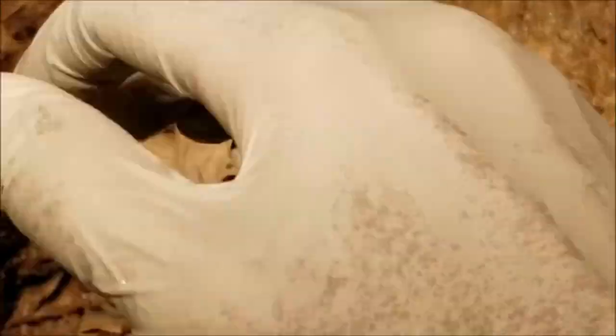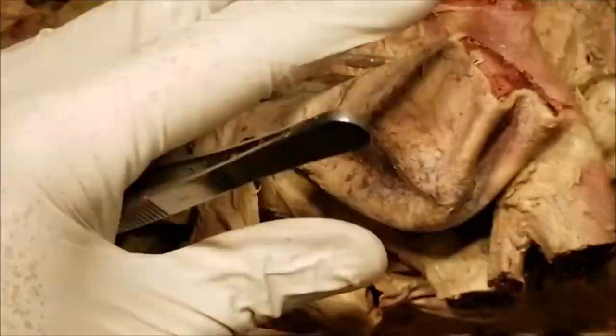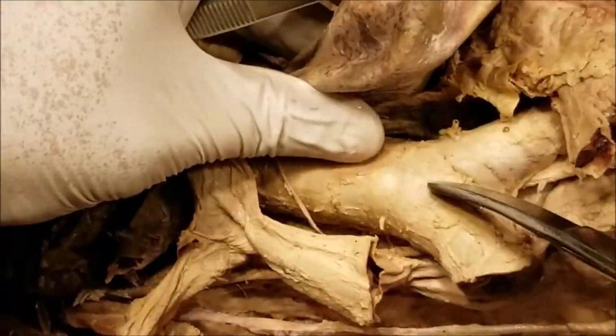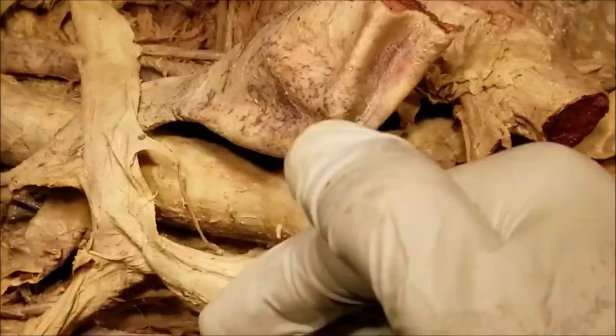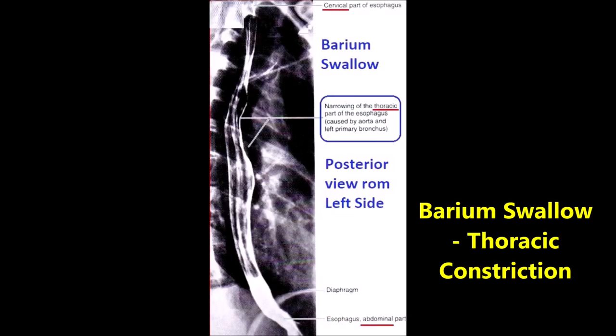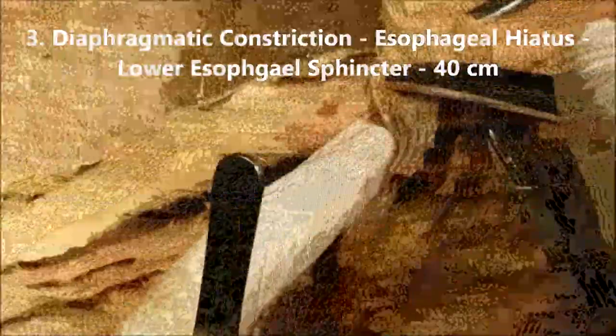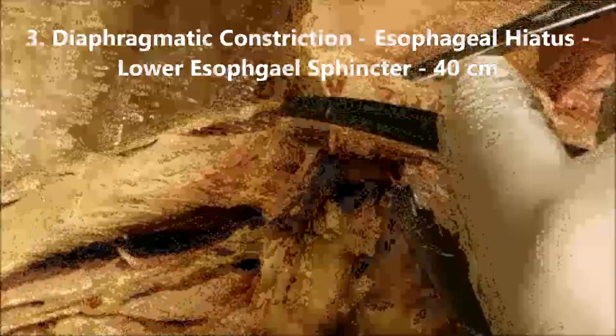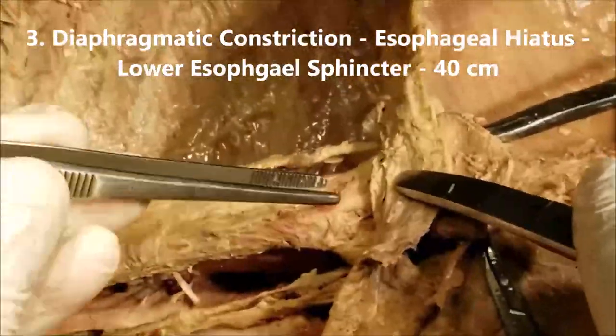The aortic arch constriction is from the sides, therefore it is best seen in an anteroposterior view. While the tracheal bifurcation constriction is more anteroposterior, so it is best seen in a lateral view of a barium swallow. This is a barium swallow to show the aortic arch and the left main bronchus constriction of the esophagus. The third constriction is at the esophageal hiatus, at the level of 40 cm from the incisor teeth.